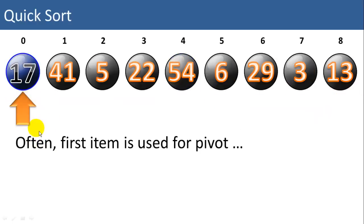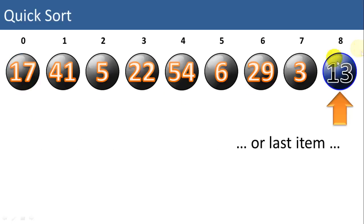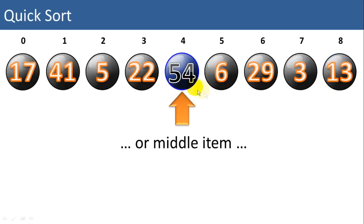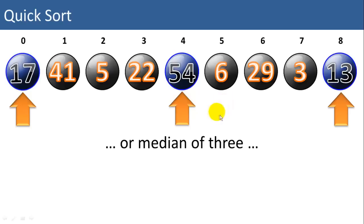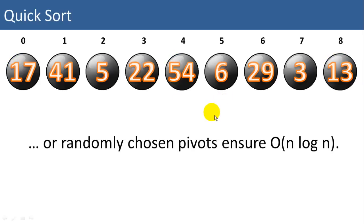Selecting a pivot is key to the success of quicksort. Often times you'll see the first item used for the pivot, but that's not always the best choice. Your best option is to find a pivot where you split the list in half. If it's an already sorted list, the first item is not going to split the list in half. Sometimes the last item is chosen, but again, if the list is already sorted, that's not going to split the list in half. The middle item is not a bad choice, or the median of three, which is what we're going to use here. Sometimes you can use randomly chosen pivots to ensure big O of n log n performance.